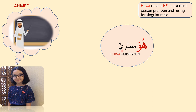Today we learnt Dhamaa'ir al-Munfasila, or detached pronouns, divided into three types: first person Mutakallim, second person Mukhaatib, and third person Gha'ib. Let us revise all pronouns: Ana — I; Nahnu — we; Hua — he; Huma — they both, for female and male; Hum — they, for male; Hia — she; Hunna — they, for female; Anta — you, for male; Anti — you, for female; Antuma — you both, for female and male; Antum — you, plural for male; Antunna — you, plural for female.